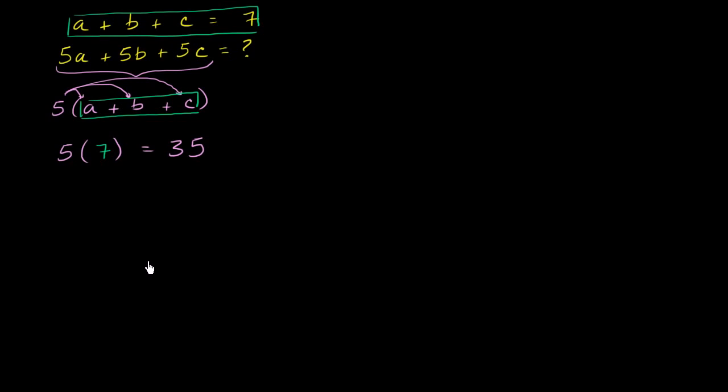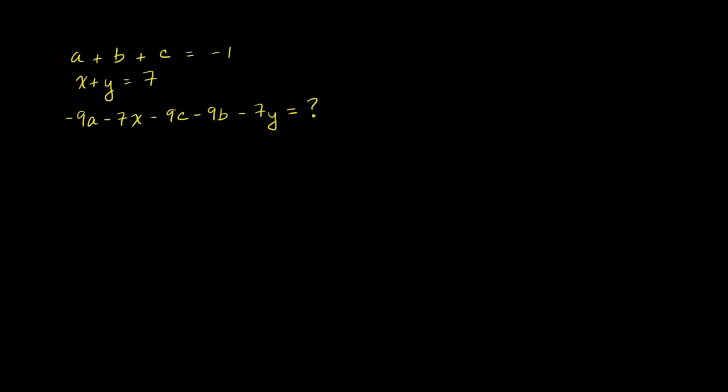Let's do one more of these, and this is going to be a little bit more involved, but hopefully you see the same idea. So we're told a plus b plus c is equal to negative 1, and we have two more variables here. We're told that x plus y is equal to 7, and then they ask us this big hairy thing, what is this equal to?